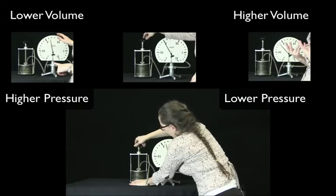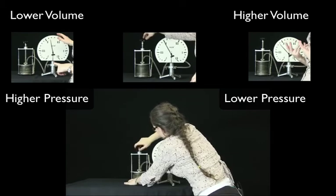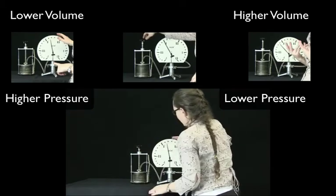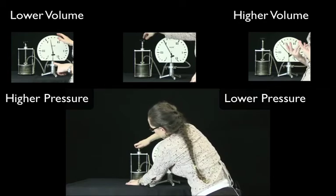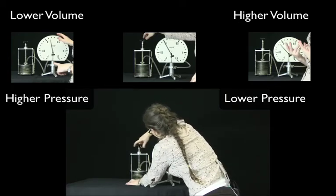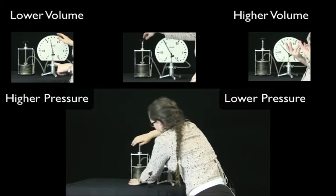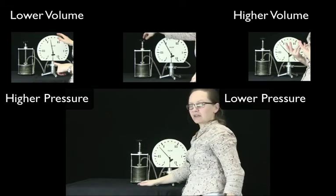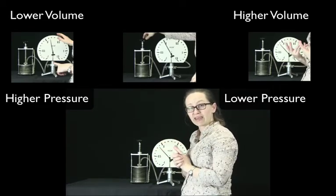You can see as the volume's going down, the pressure inside the flask measured on this gauge is increasing. Now let's increase the volume of the flask. Now that that volume has increased, the pressure has decreased. So we have an inverse relationship there.